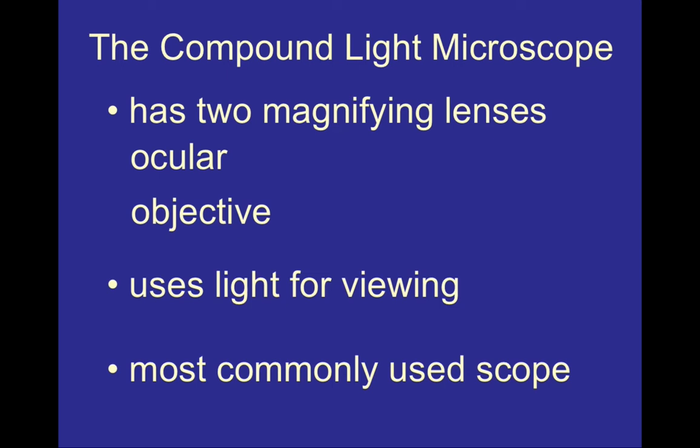Our two lenses are called the ocular lens and the objective lens. The ocular lens does not ever change — it always has the same magnification, and it's what you look through when you're looking into the microscope. The objective lenses, on the other hand, are the ones that do change. We can rotate the objective lenses in what's known as the nosepiece to give us stronger magnifications of the picture that we're looking at.